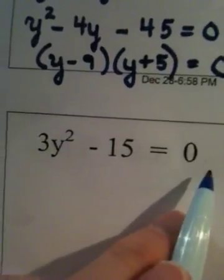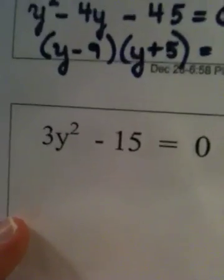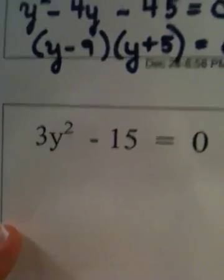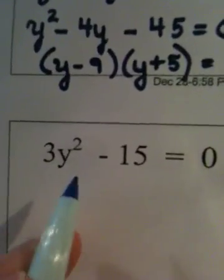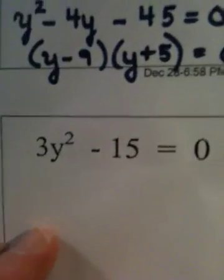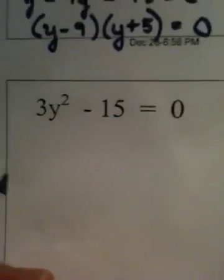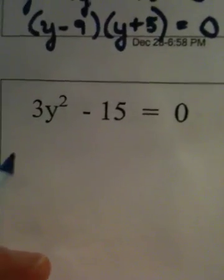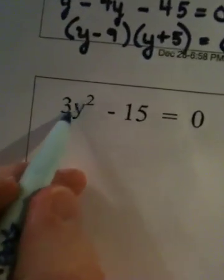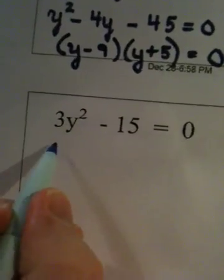Next problem. 3y squared minus 15 equals 0. Again, this is a quadratic equation. We have degree 2. But I want you to notice, in this equation above, we had a middle term. In other words, there was a y term. Here, there is no y term, no middle term. Whenever there is no middle term, the best approach to use to solve this quadratic equation is what is called the square root property. And to use the square root property, we have to get y squared by itself first before we can apply the property.